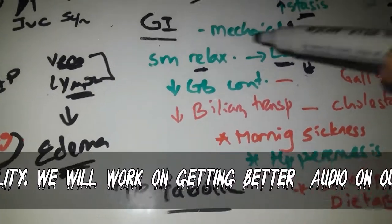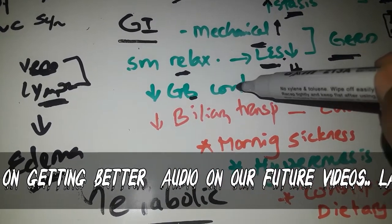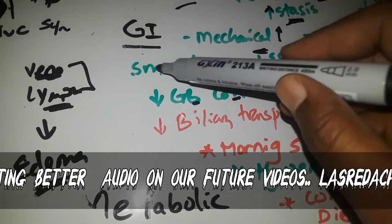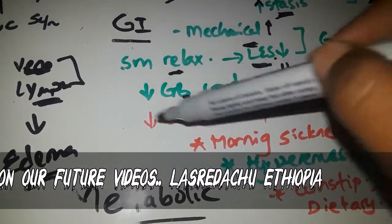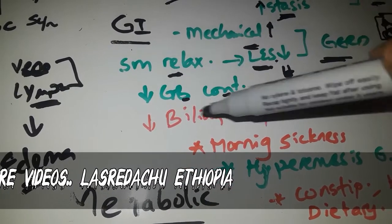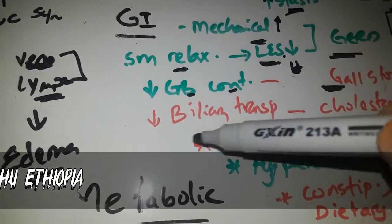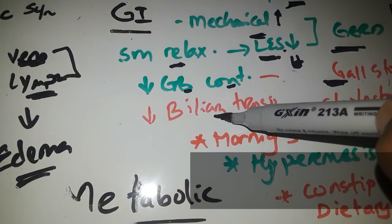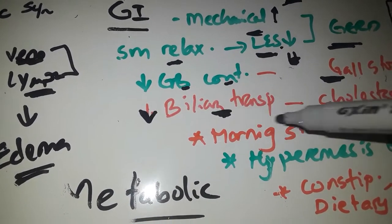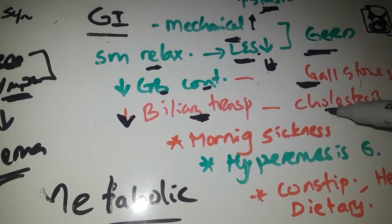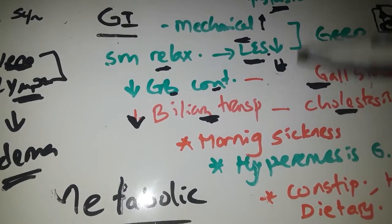The same effect in gallbladder: gallbladder motility and gallbladder contraction will decrease because progesterone is a smooth muscle relaxant. There is a risk of gallstones in pregnancy. Also, estrogen can cause biliary stasis, increasing the risk of cholestasis.